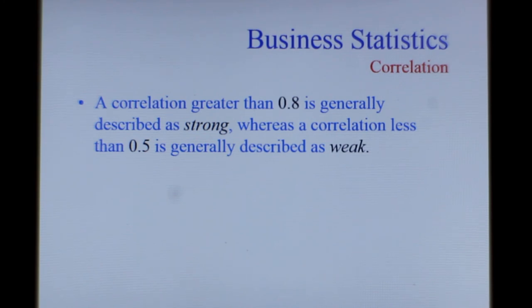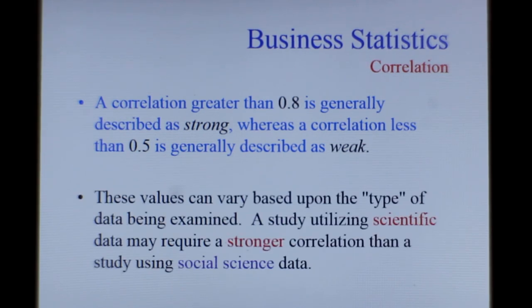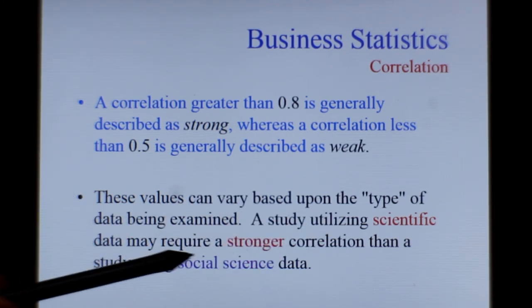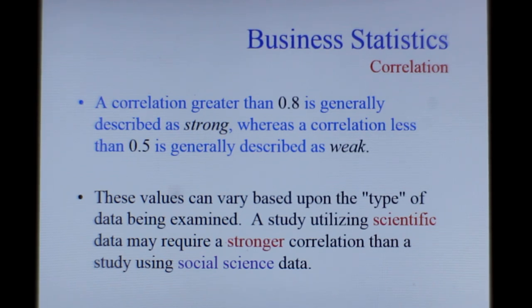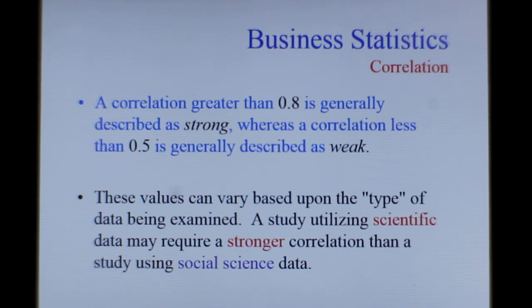A correlation greater than 0.8 is generally described as strong, whereas a correlation less than 0.5 is generally described as weak. However, they depend on the type of situation where we apply. A study utilizing scientific data may require stronger correlation compared to social science data. Say for example, if you talk about healthcare and pharma industries, the drug efficacies or vaccine efficacies, you need to have a very high correlation between the drug administered and the effectiveness. Then only you can deem it is pretty good. It is a very stringent requirement in such areas. So depending on the type of data that is being examined, the correlation coefficient has to be used in business decisions.